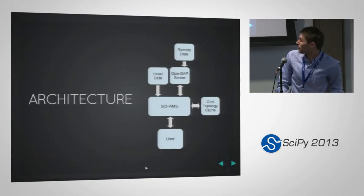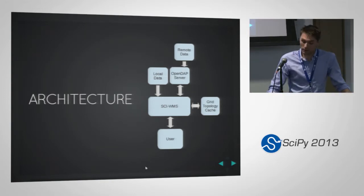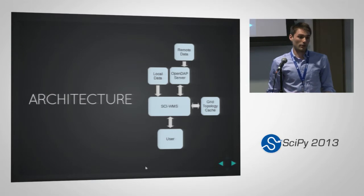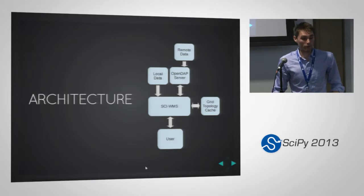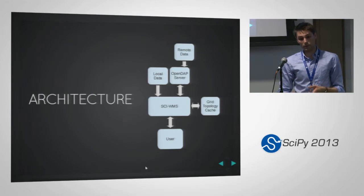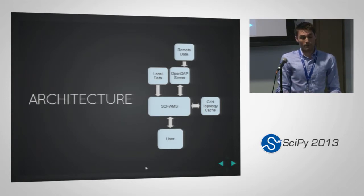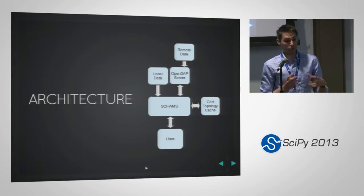This is the basic architecture of the system. The most important thing to note is the grid topology cache. It wouldn't be feasible in a web mapping setting to, every time you request a map of a large model array of temperature, also have to request the time, depth, lat, and lon variables and subset them. So when we initialize datasets, we store all coordinate variables and topological relationships locally on the server, and only do lazy access to remote datasets for what we actually need.